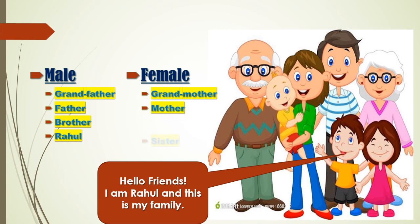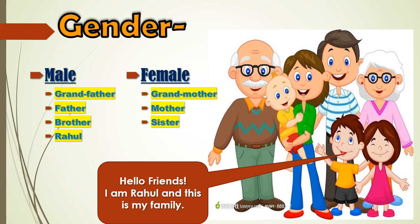From the picture we can see that there are four male members and three female members in Rahul's family. Those nouns which help us know whether a person is male or female are known as gender. Grandfather, father, brother, and Rahul are male members, hence they are kept under the masculine gender category. Whereas grandmother, mother, and sister are female, hence they are kept under the feminine category.